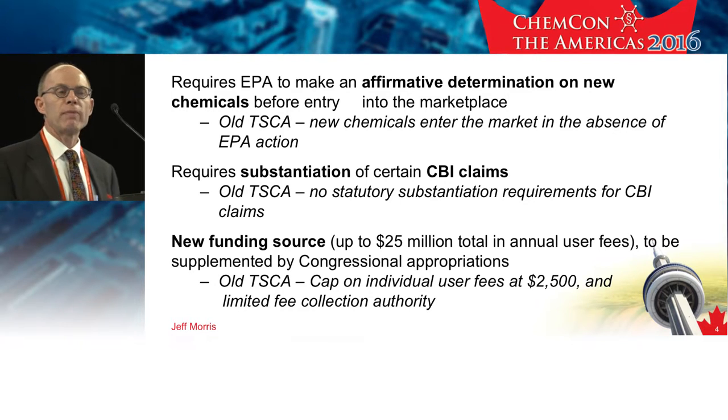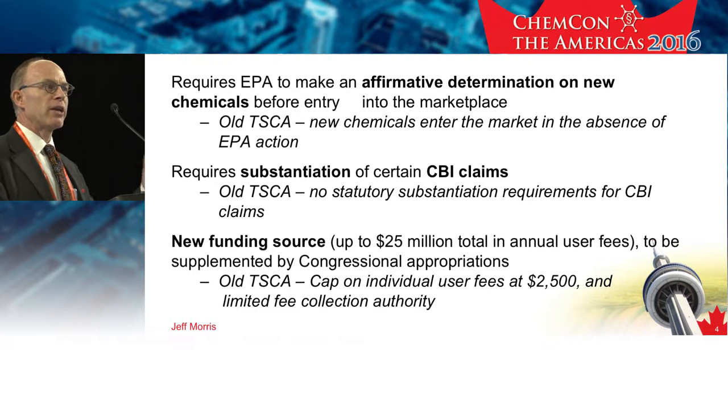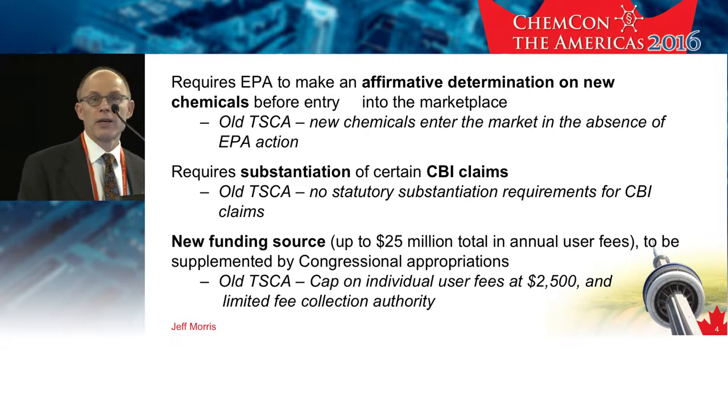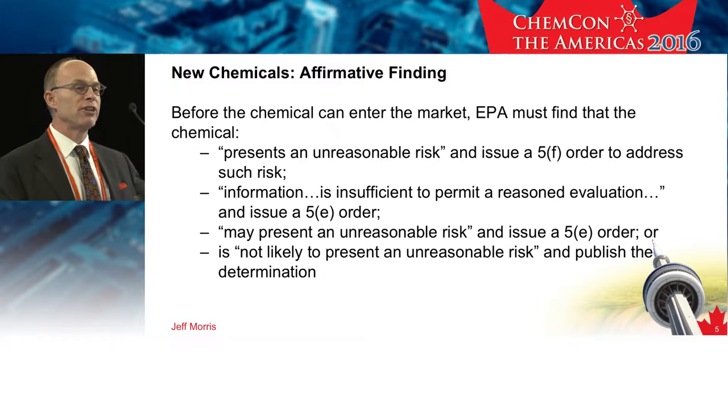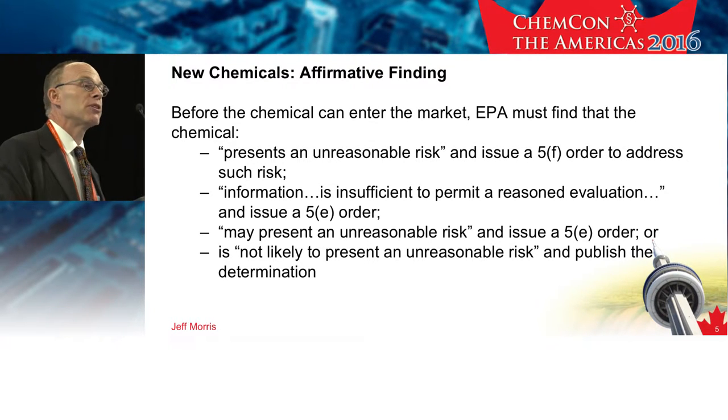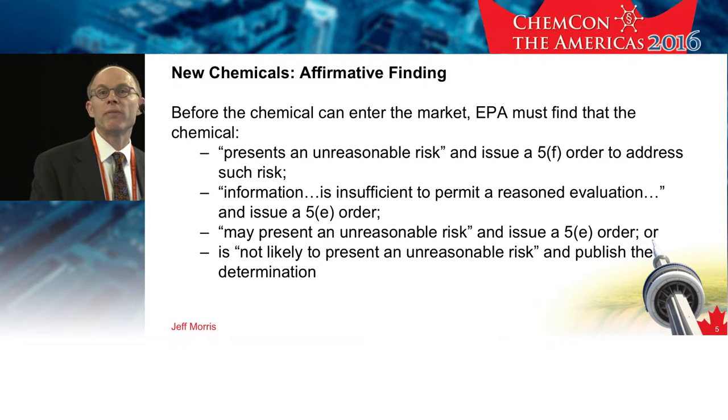For new chemicals, the changes were equally profound. Now, for a new chemical substance during our pre-manufacture review, we must make an affirmative determination as to whether that chemical substance presents an unreasonable risk. I've outlined here essentially four determinations the agency might make for a new substance during that 90-day review for pre-manufacture notices. The first is 'will present': if we have information suggesting the chemical substance will present an unreasonable risk, we would move right to an order under Section 5F of the statute to address it.